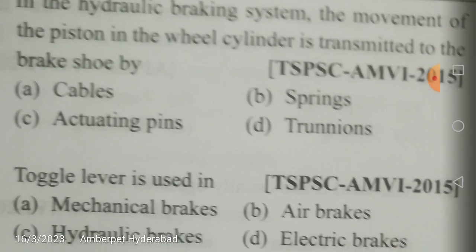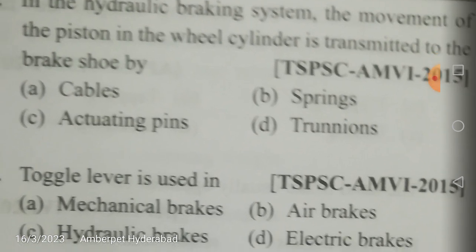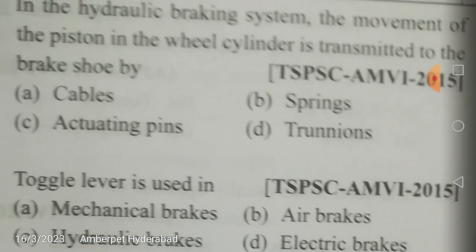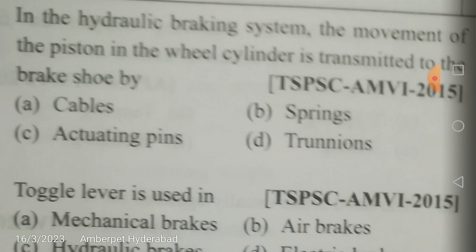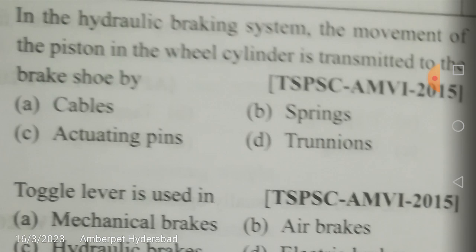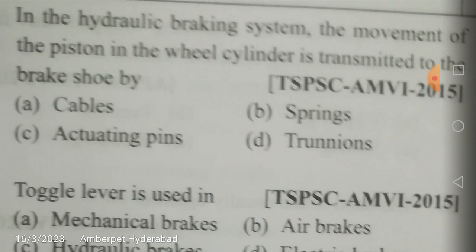In the hydraulic braking system, the movement of the piston in the wheel cylinder is transmitted to the brake shoe by which mechanical element? Is it through cables, springs, actuating pins, or trunnions? Wheel cylinders force the brake shoe against the drum. Each cylinder has pistons, rubber seals, cup spreaders, springs and dust covers. When brakes are applied, fluid under pressure enters the inlet port and forces the piston outward to push the shoes. The movement of the piston is transmitted to the brake shoe by a pin, pilot joint, or trunnions. The correct answer is C.